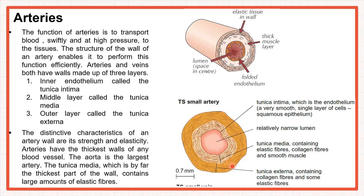The outermost layer is the tunica externa, which mostly contains collagen fibres and some elastic fibres. These three layers — tunica intima, tunica media, and tunica externa — are found in veins as well. The distinctive characteristics of an artery wall are its strength and elasticity. Arteries have the thickest walls of any blood vessel; the aorta is the largest artery. In arteries, the tunica media is by far the thickest part of the wall and contains a lot of elastic fibres.